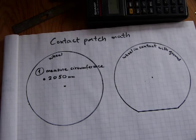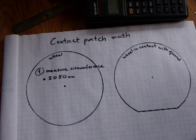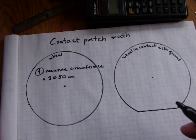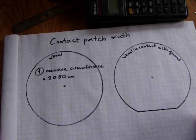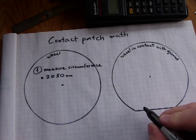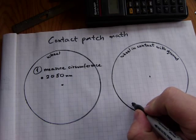By the way, I only inflated my tire to about 50 psi — it should run somewhere around 90. So the contact patch is intentionally longer than it should be. We'll see how that affects the top speed. That completes step two.